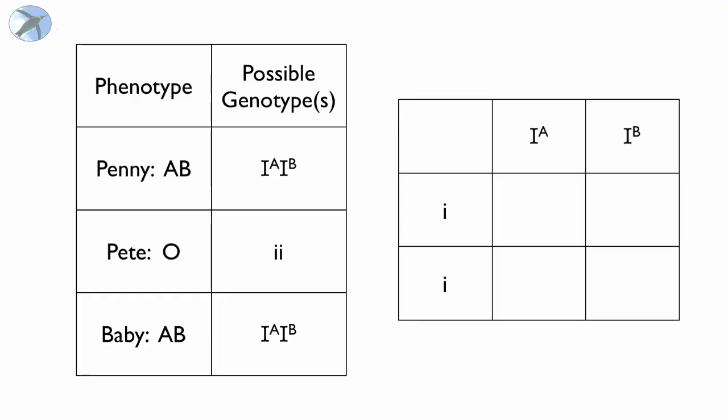If you want to see the Punnett square, this is what it would look like. You would get 50% of the offspring being type A and 50% of the offspring being type B between Penny and Pete. There is no way this couple could produce an AB child. So that is bad news for Pete. He cannot be the father.